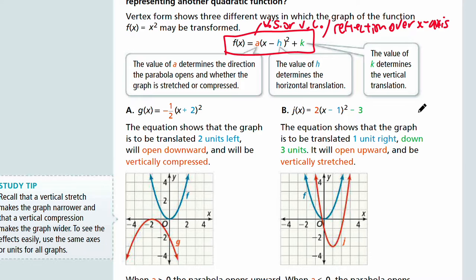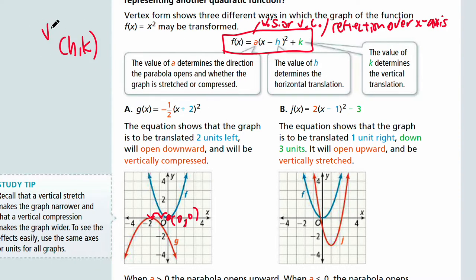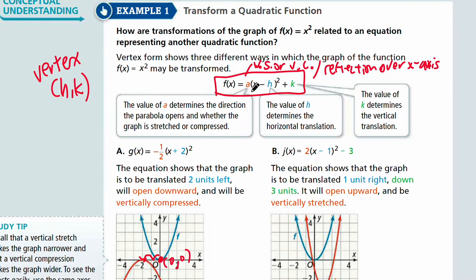Whatever value you see for K is going to be the value for K, because it's written as plus K, and it represents the vertical translation. Your parent function starts with vertex (0, 0), and whatever translation you apply will move the vertex to the point (H, K). The vertex is H comma K — make a note of that as well.